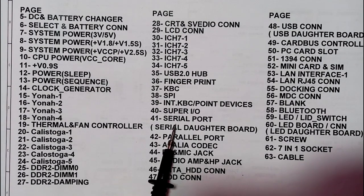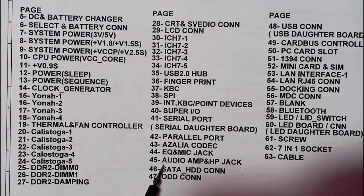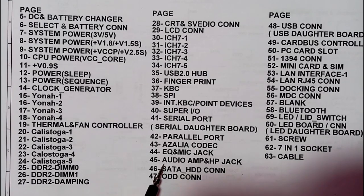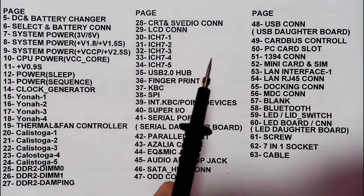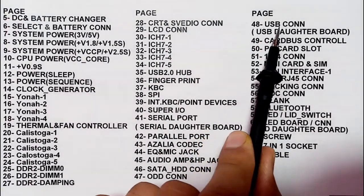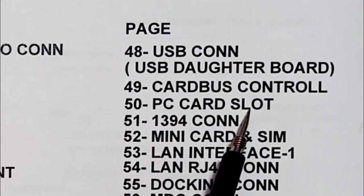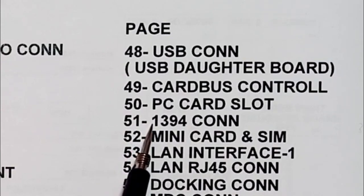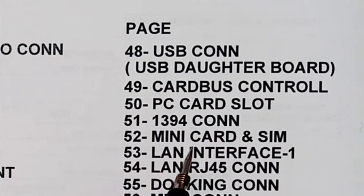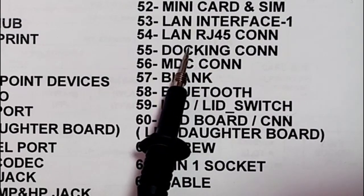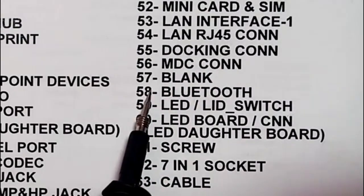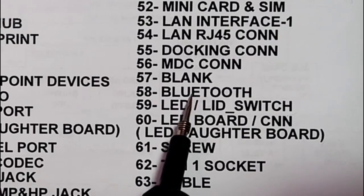The layout may differ from one laptop to another, but the basics and working principles are always the same. You will always find the system power ICs, the CPU, north bridge, ICH, BIOS, and super input/output. If you understand just one schematic you can understand any other schematic and any other motherboard. In page 48 we have USB connectors, page 49 the card bus controller, page 50 the PC card slot, page 51 the 1394 connector, page 52 mini card and SIM, and pages 53-54 the LAN interface and RJ45 Ethernet connector.